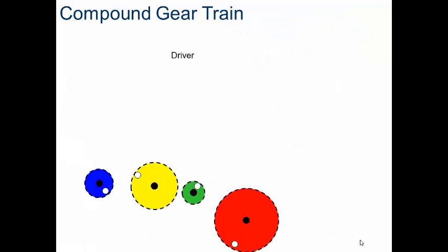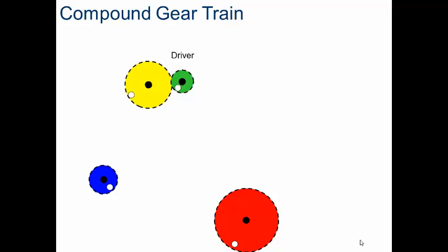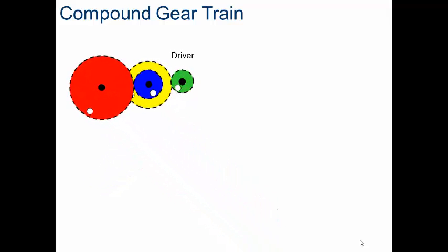Okay, let's take a look at the compound gear train. A compound gear train, remember, is just simply gears that are stacked on top of each other and mated a little bit differently.